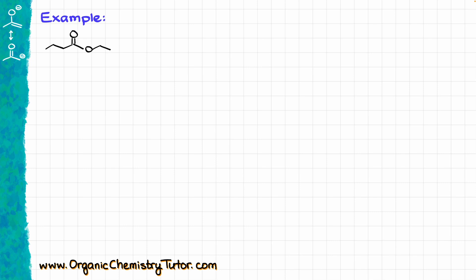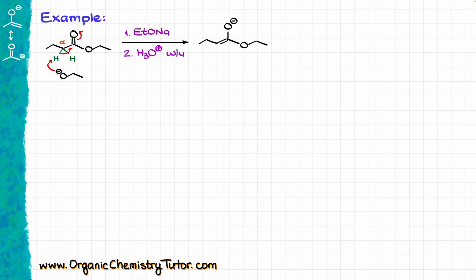Now let's look at an example. I'm going to take a slightly more complex ester — ethyl butyrate, or ethyl butanoate — and like in the previous case, I'm going to treat it with sodium ethoxide and then do my acidic workup at the end. I'm going to start by identifying the alpha position right next to my carbonyl, so I know that is the position we are going to deprotonate to make our enolate. I'm going to bring my ethoxide, yeet that proton off, and make my enolate. From this point, I'm going to bring this second equivalent of my ester. I do recommend that whenever you are drawing these mechanisms, you draw those esters one under the other, because it's going to be a little bit easier to visualize your products and how the bonds are being made.